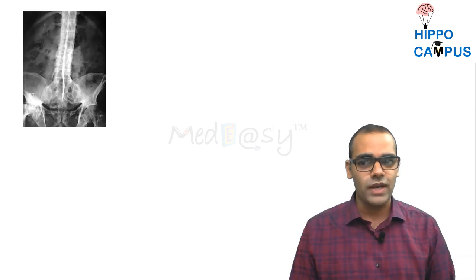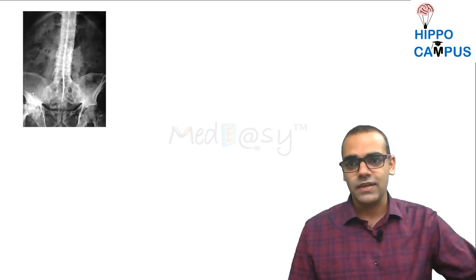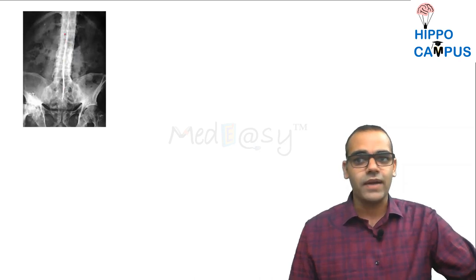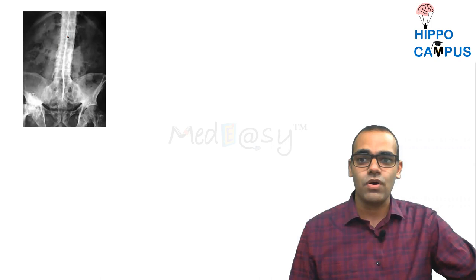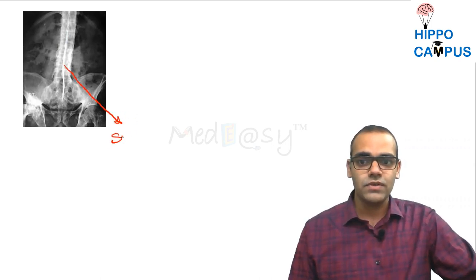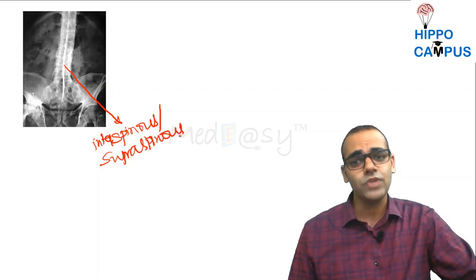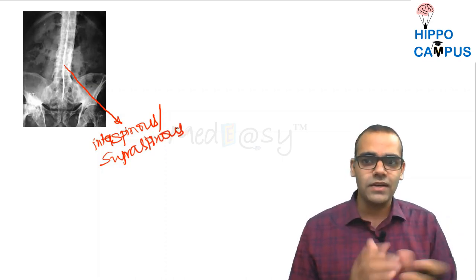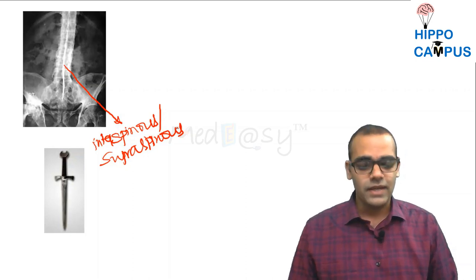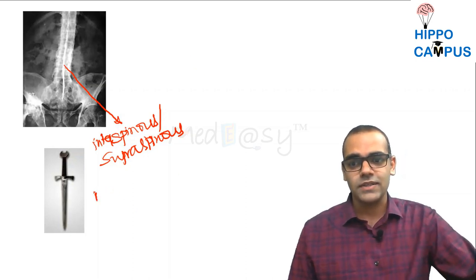On another X-ray, you can see the central line or spinous line is calcified. This is due to calcification of the interspinous and supraspinous ligaments, which gives a shape resembling a dagger. That is why it is known as the dagger sign.